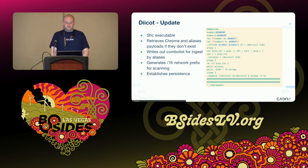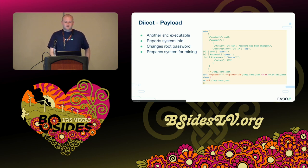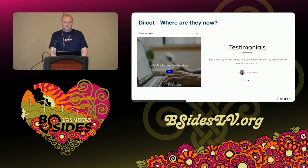Moving on to the SHC executables: the first, named Update, acts as a loader whose main purpose is to retrieve the Chrome payload and the Aliases SSH brute forcer if they don't exist on the target. The payload named Payload — confusingly the actual name — is another SHC executable mainly responsible for retrieving the XMRig miner and preparing the system for mining. It includes logic to only conduct mining operations if the target has more than four processor cores, and also determines whether it's running as root, changing the root password if so before sending a JSON file named send.json back containing the password.